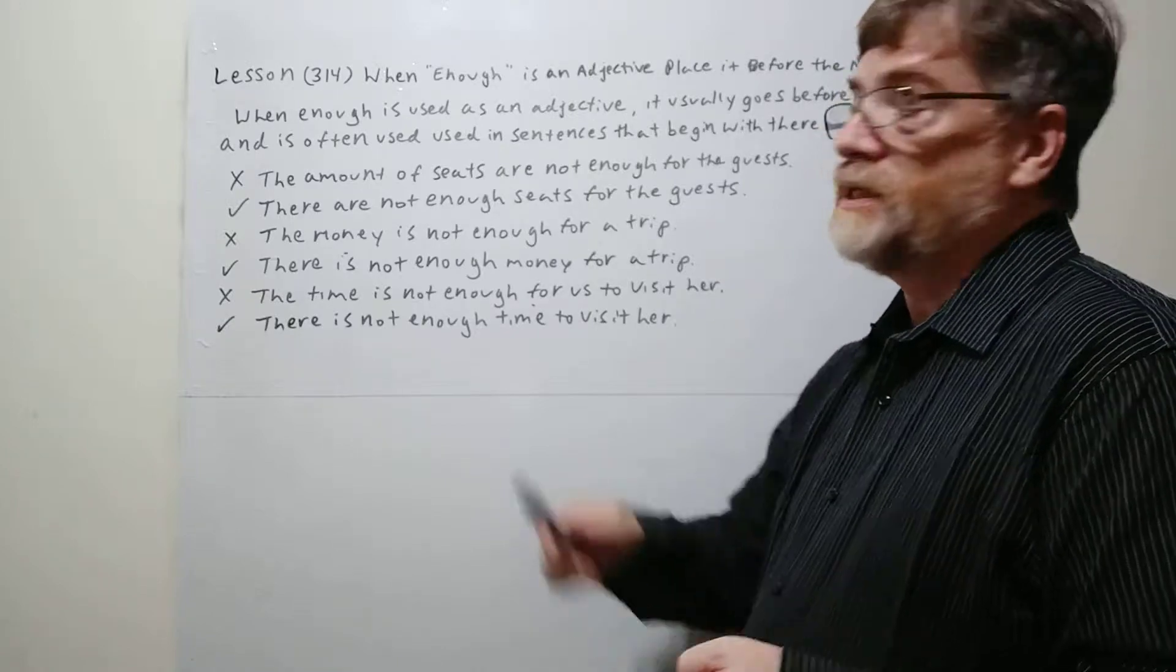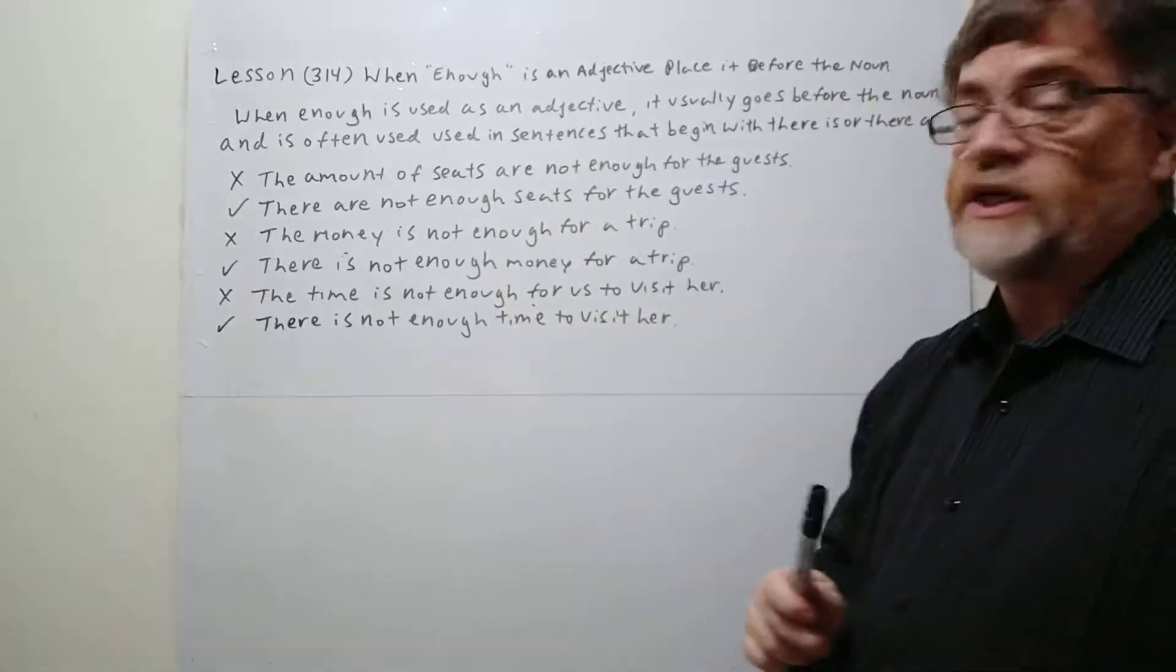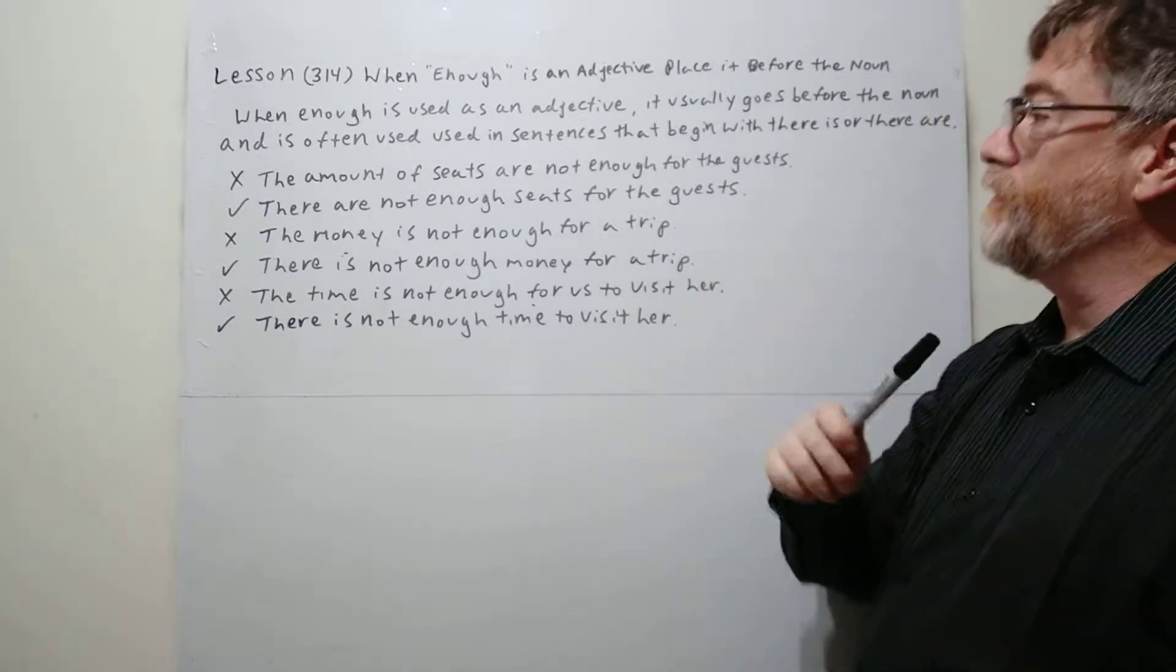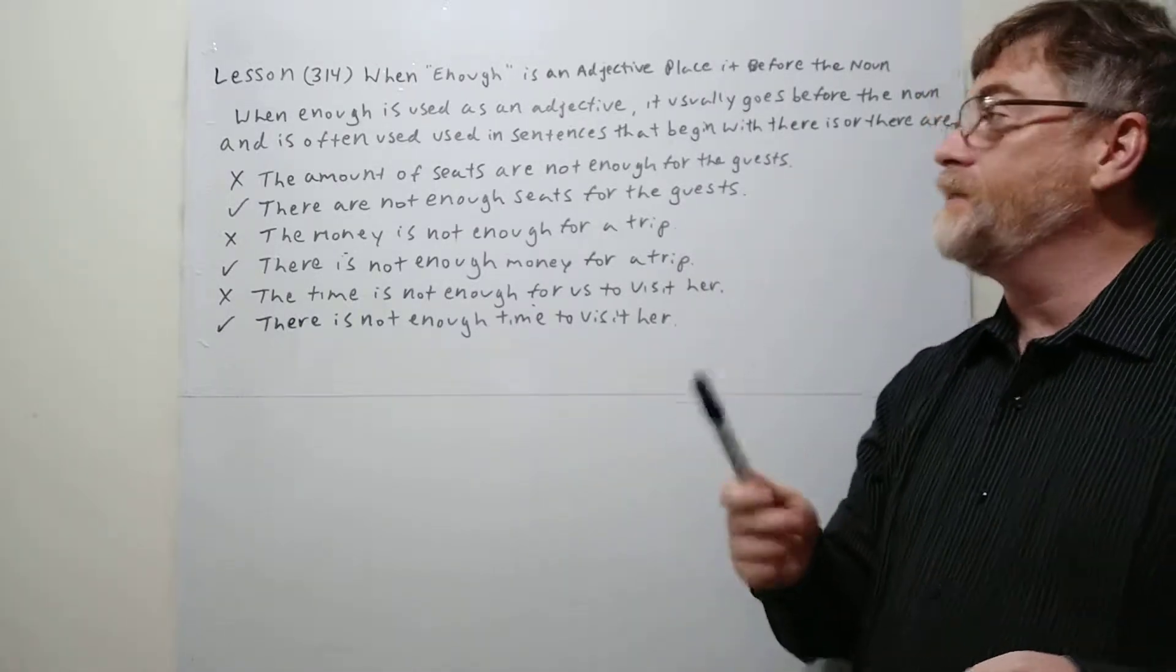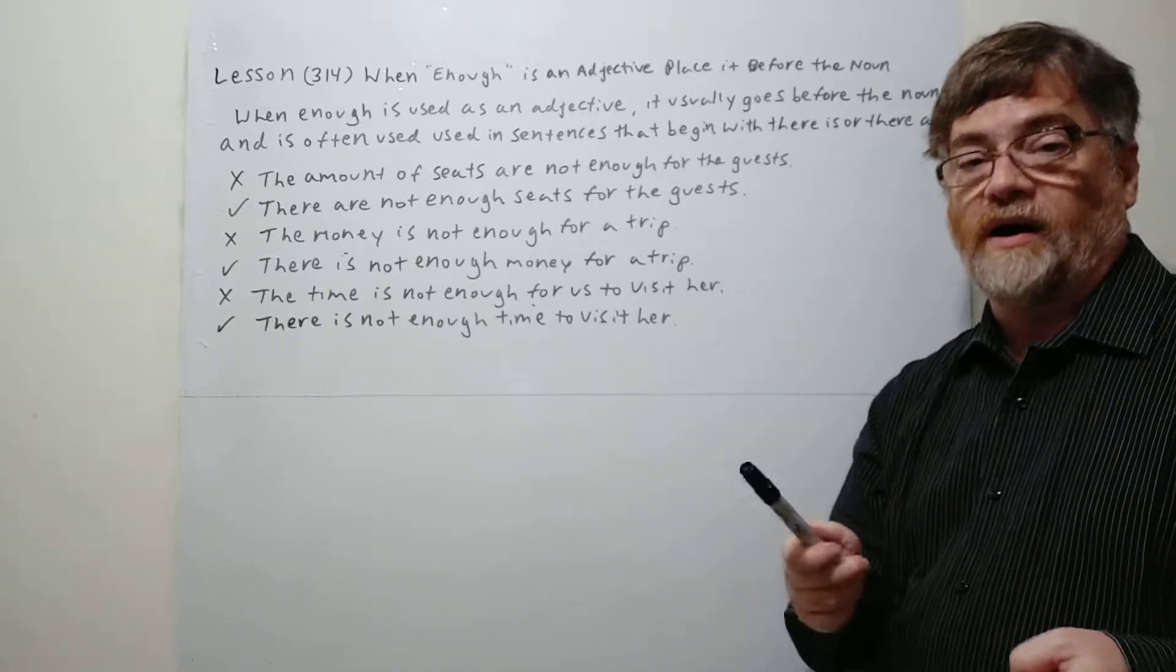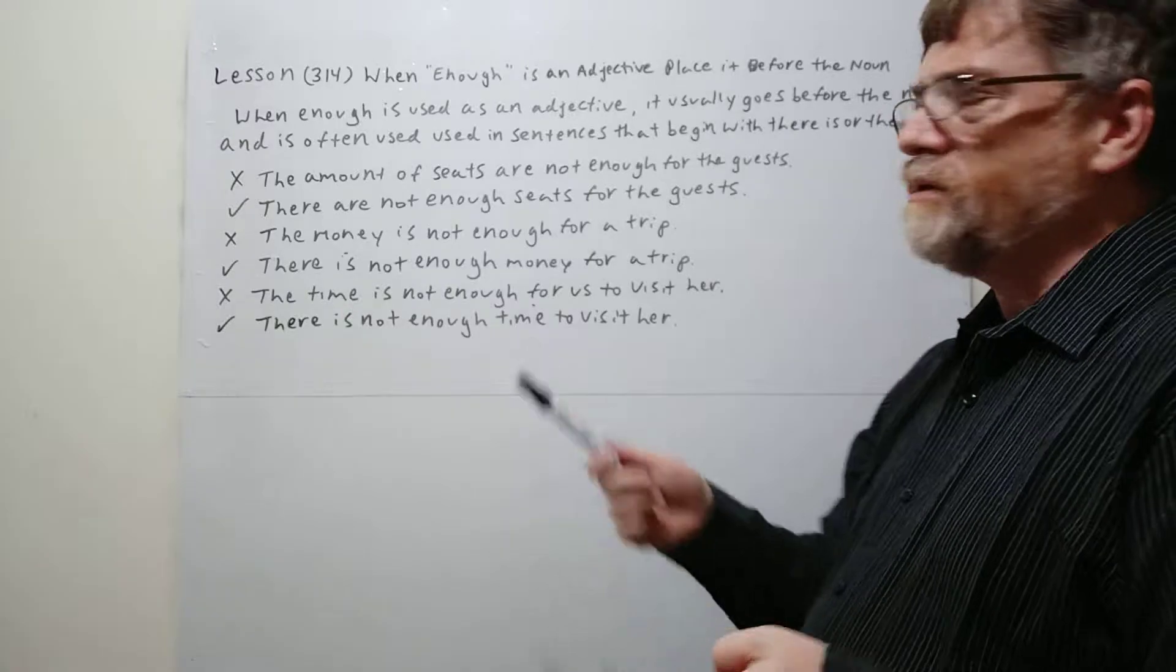So let's look at the note. When enough is used as an adjective it usually goes before the noun and is often used in sentences that begin with there is or there are. All right. So let's look at some examples.